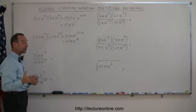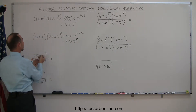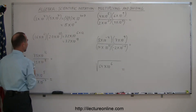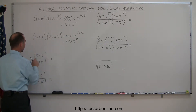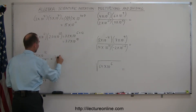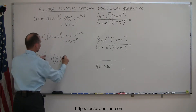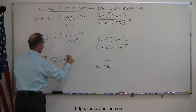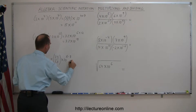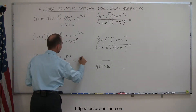When you divide, you do the same thing, but instead of adding the exponents you subtract them. So 7.5 divided by 1.5, times 10 to the 16 minus 8 power — 7.5 divided by 1.5 is 5.0, and 16 minus 8 is 8, giving us 5.0 times 10 to the 8th power.